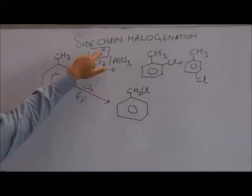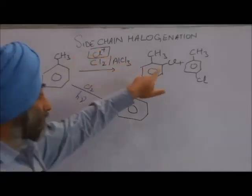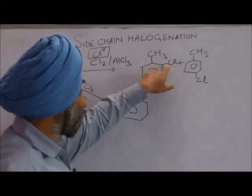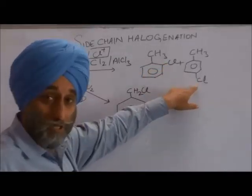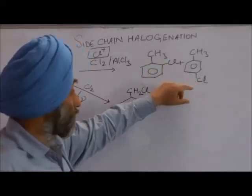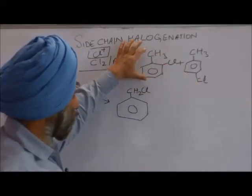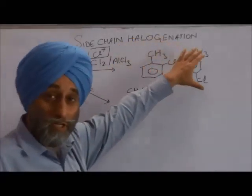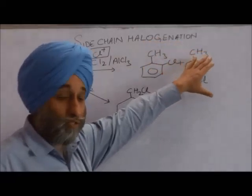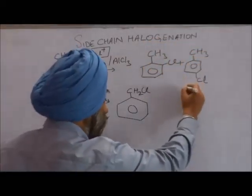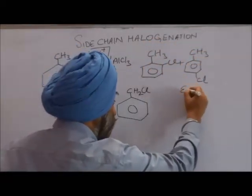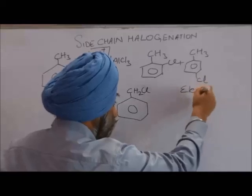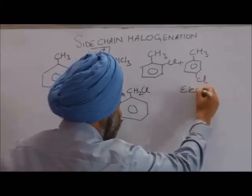As we have already discussed, Cl⁺ gets substituted at the ortho position and para position. Hence we get ortho-chlorotoluene and para-chlorotoluene. This reaction mechanism we also call electrophilic substitution.